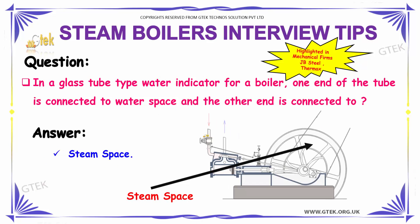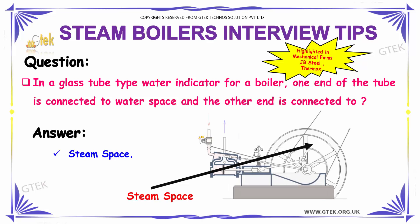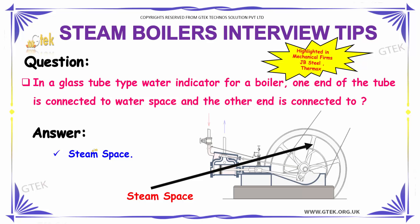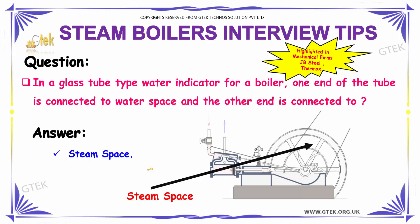In a glass tube type water indicator for a boiler, one end of the tube is connected to the water space and the other end is connected to the steam space.